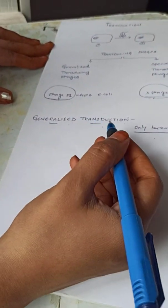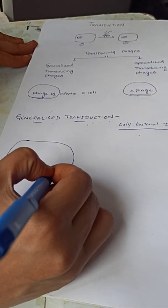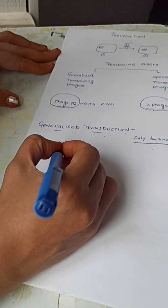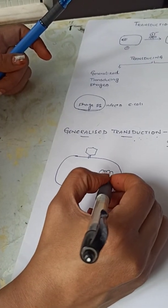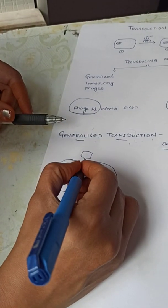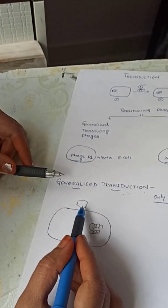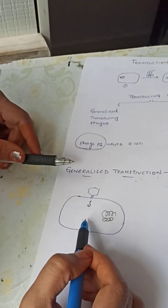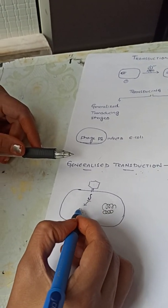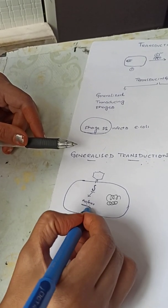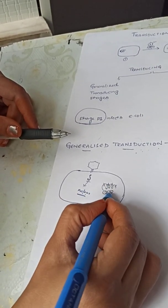Consider a bacterial cell: whenever a virus particle infects a bacterial cell, the black represents the bacterial genome and blue color represents the viral genome. The virus particle infects the bacterial cell and injects its genome into it. This viral genome produces certain nucleases, especially exonucleases, which have the ability to cleave the bacterial DNA into several fragments.